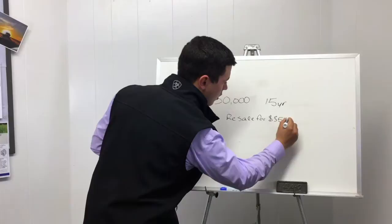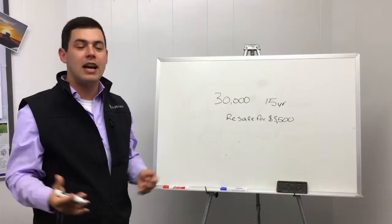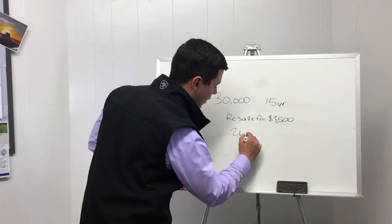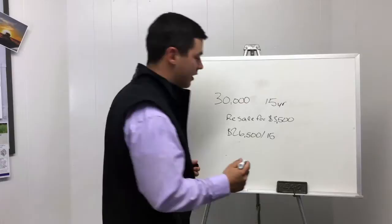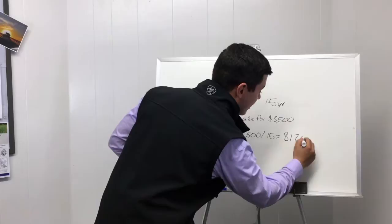And figuring depreciation then we'd subtract the resale value or the salvage value from our upfront cost, giving us $26,500 as the total depreciation. And when we divide that by 15, diffused across the 15 years, it actually leaves us with a yearly depreciation figure of $1,767.